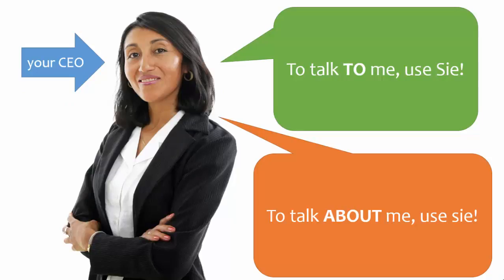Let's go back to the example of your CEO. To talk to her, you would use the word you in English — that's a second-person pronoun, which is used to talk to people. In German, you would use the second-person pronoun Z with a capital S. To talk about her, you would use the word she in English, which is a third-person pronoun — those are used to talk about people. In German, you would use the third-person pronoun Z with a lowercase s.